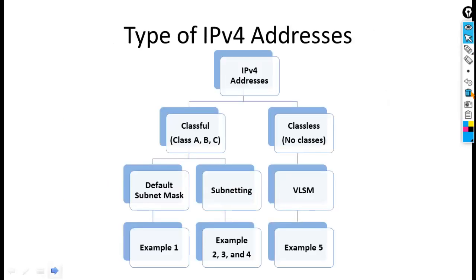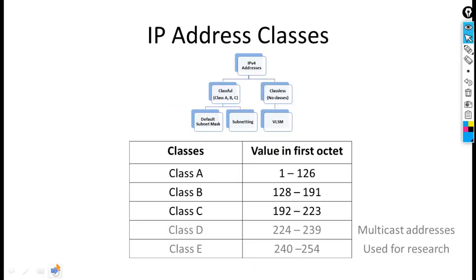Types of IP version 4 addresses: IPv4 can be broadly divided into two categories — classful address and classless address. Classful addresses can be further divided into default subnet mask and subnetting. We are working with classful IP addresses in this branch, and classless addresses have no classes.